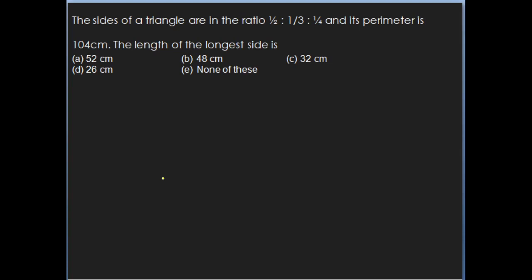The next question: the sides of a triangle are in the ratio 1/2 is to 1/3 is to 1/4 and its perimeter is 104 centimeters. The length of the longest side is? We consider the ratios of the sides as 1/2 is to 1/3 is to 1/4. Since this is in fractions, we'll make the denominators equal.